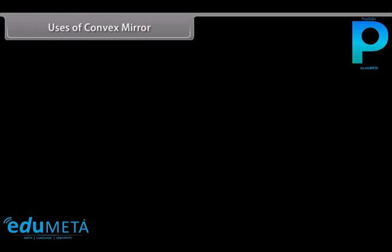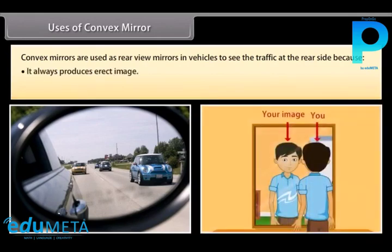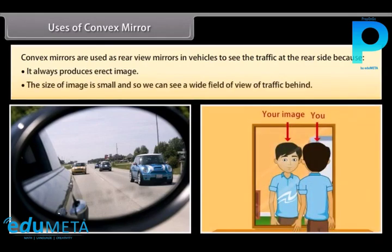Uses of convex mirrors: convex mirrors are used as rear-view mirrors in vehicles to see the traffic at the rear side, because they always produce an erect image, the size of the image is small, and so we can see a wide field of view of traffic behind.